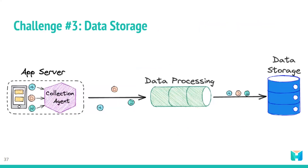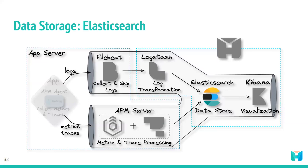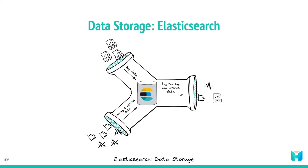The third challenge to be solved to achieve observability is the data storage component. The data store is where data will be housed and made available for querying by the visualization component. Elasticsearch is a distributed search and analytics engine and document store — it stores complex data structures serialized as JSON documents. Elasticsearch stores and indexes data in a way that enables near real-time searching. It is a durable data store which means it can persist long-term data as needed. Within the Herald pipeline, Elasticsearch receives data from Logstash and the APM server and acts as a storage component that can be queried through Kibana.